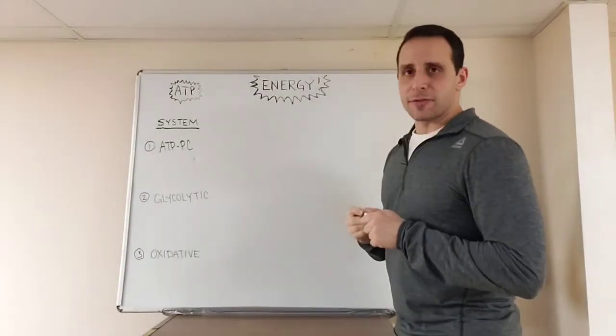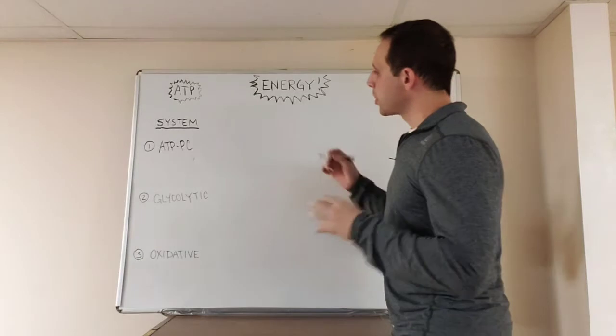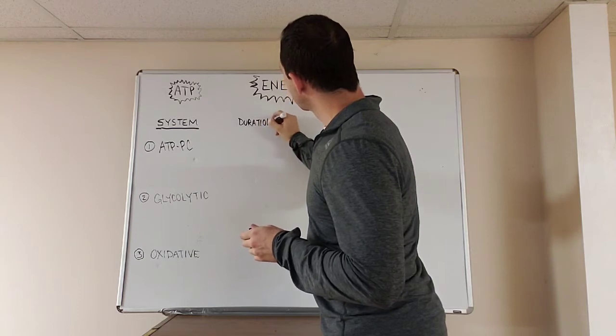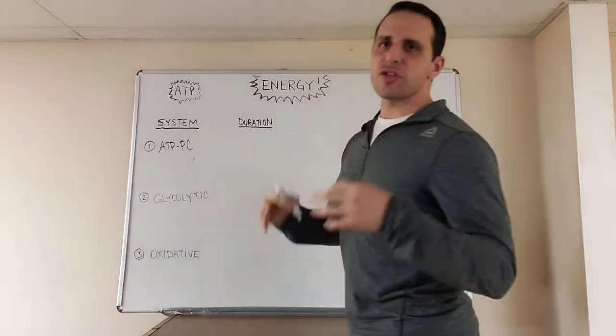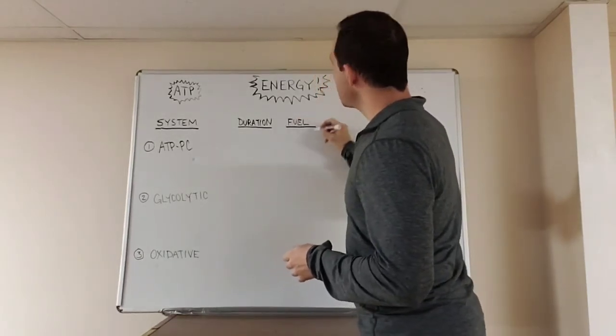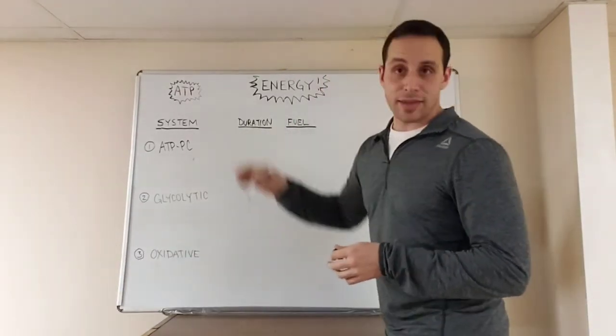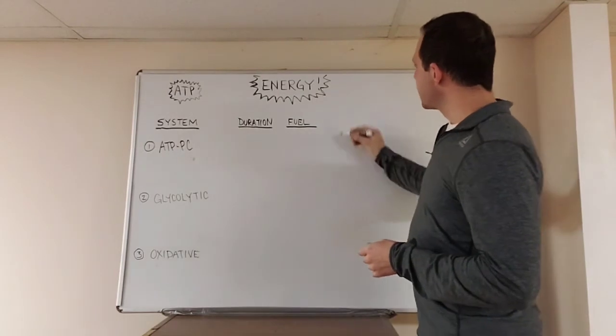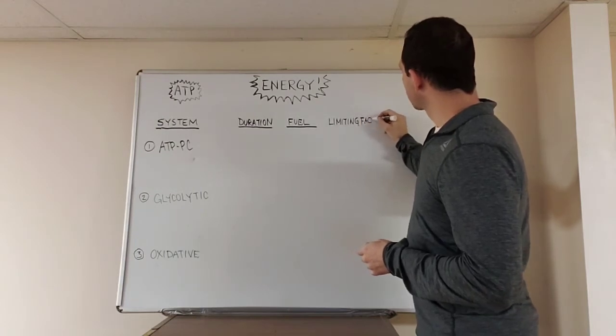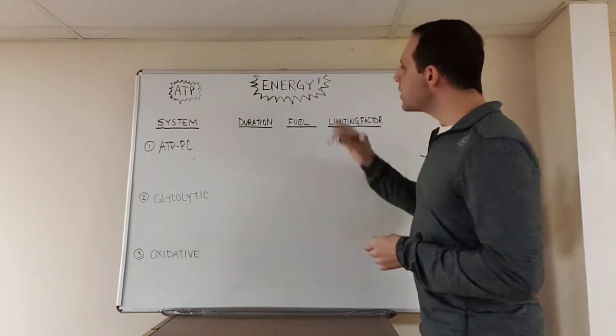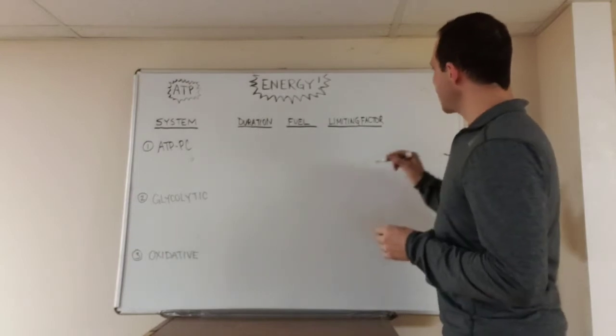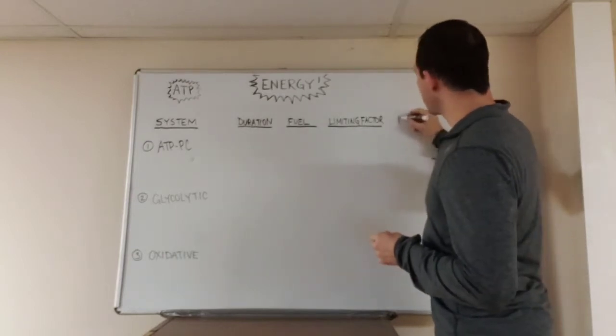Now, the reason there are three different ones is they work at different capacities. And the big things that separate them are going to be, number one, the duration in which they're active or the duration they're dominant. The second is going to be their fuel source. The next thing that's going to be important is, what are their limiting factors? Why are they only dominant for certain durations or at certain time frames? And the last thing we're going to be talking about is the type of recovery you need for each one.